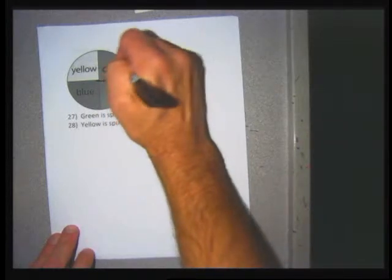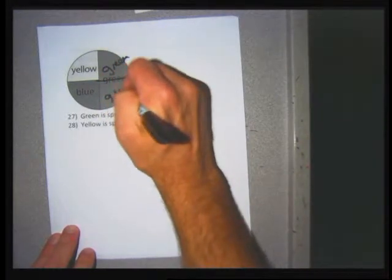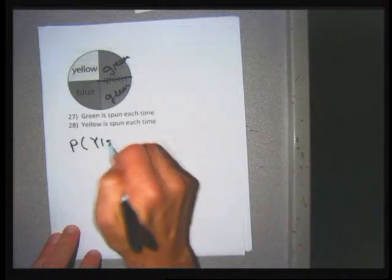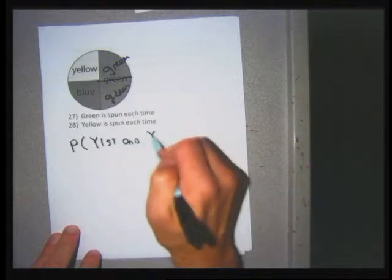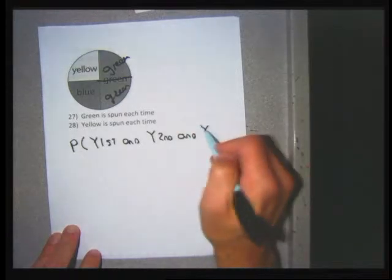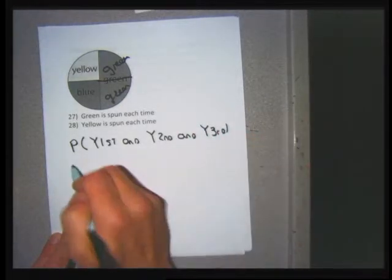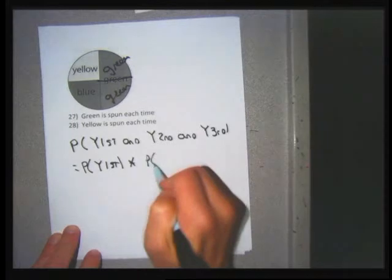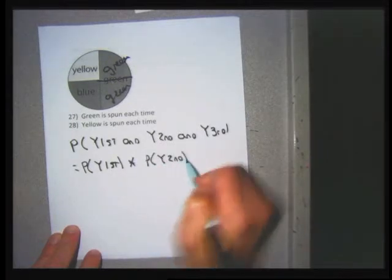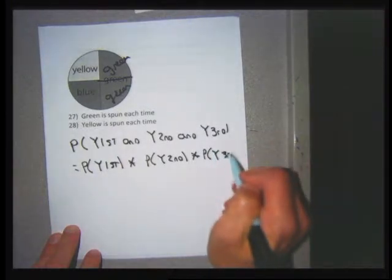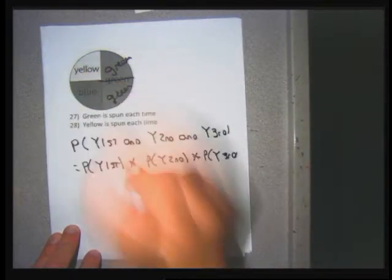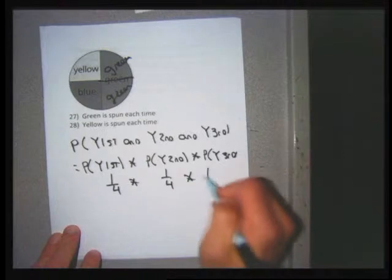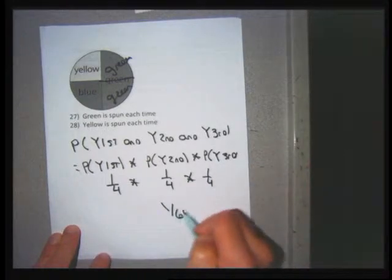For problem 28, spinning three times, I want yellow first, yellow second, and yellow third. That equals the probability of yellow first times yellow second times yellow third. There's one yellow region of four, so it's 1 over 4 each time. That's 1/4 × 1/4 × 1/4 = 1 over 64.